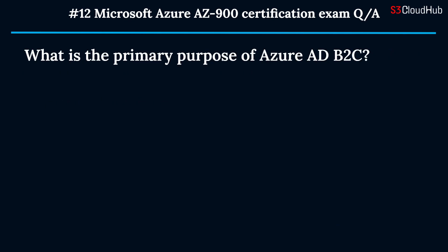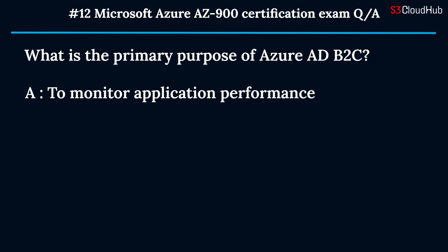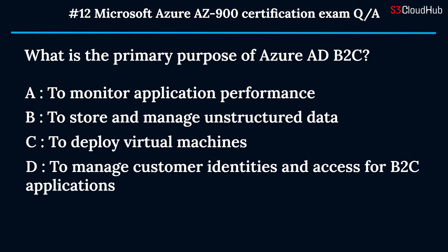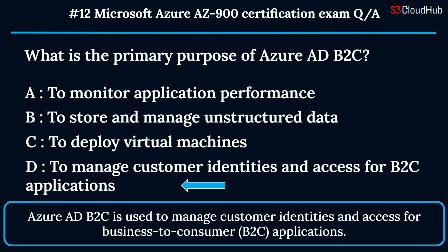The twelfth question: what is the primary purpose of Azure AD B2C? Option A: to monitor application performance. Option B: to store and manage unstructured data. Option C: to deploy virtual machines. Option D: to manage customer identities and access for B2C applications. The correct answer is option D. Azure AD B2C is used to manage customer identities and access for business-to-consumer applications.